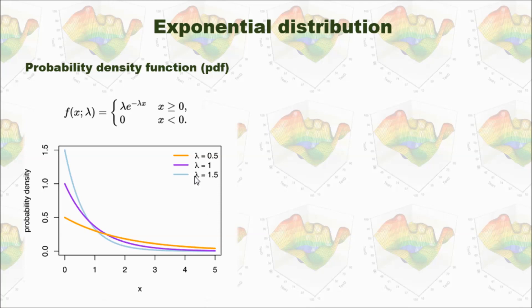And the lambda, the larger, the decrease will be faster. For example, if lambda equal to 1.5, you see the curve decrease like this. If lambda is only 0.5, then it shows the orange line, it decreases much slower.